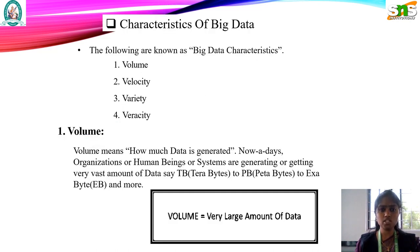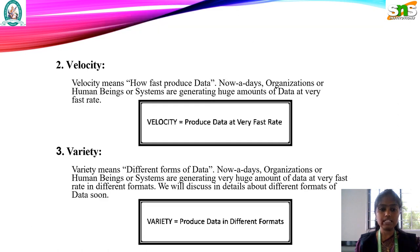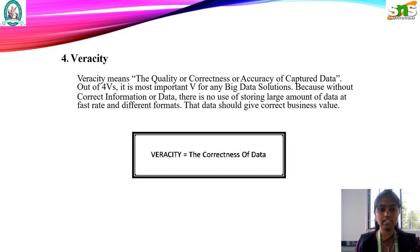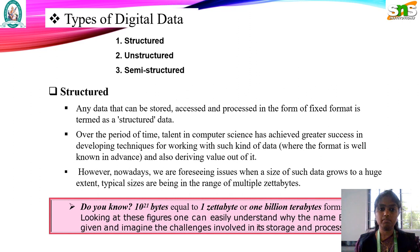The characteristics of Big Data are known as the four V's. There are four types: Volume, Velocity, Variety, and Veracity. Volume is the amount of data. Velocity is the speed of data. Variety is the type of data. Veracity is the correctness of the data.